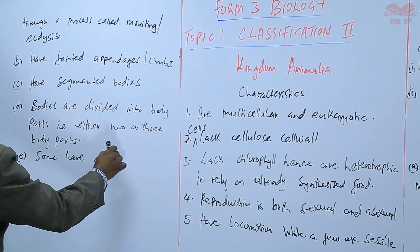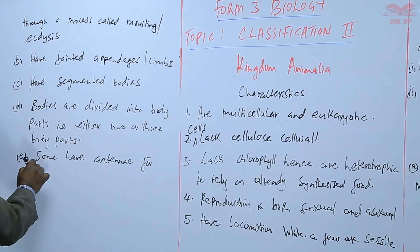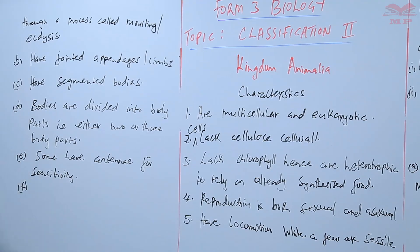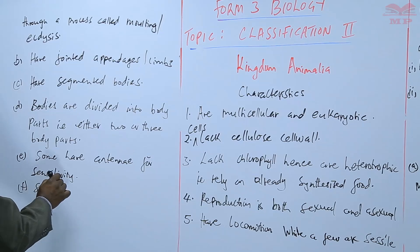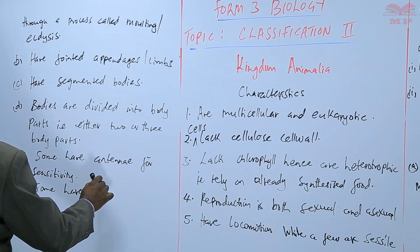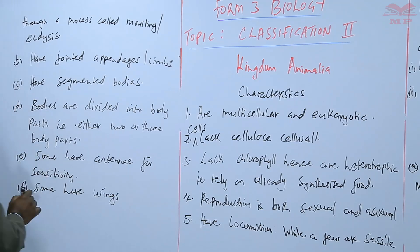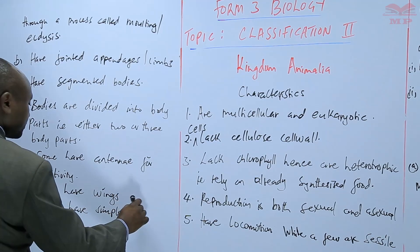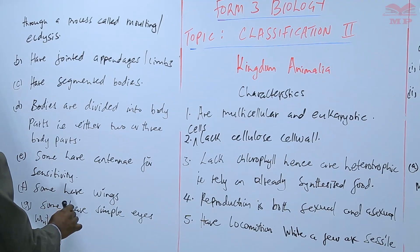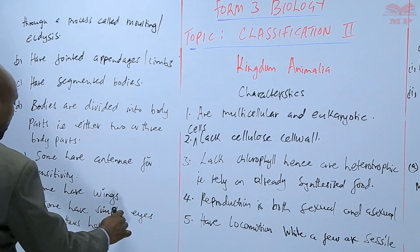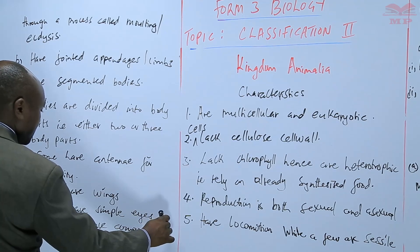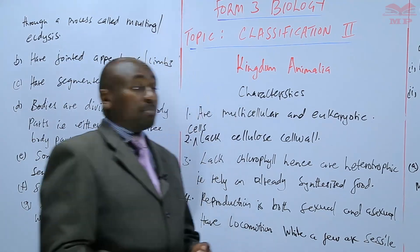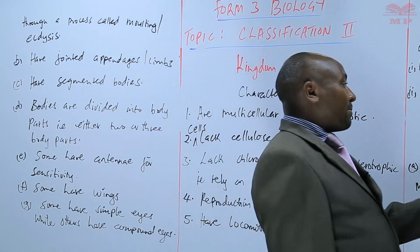Some members have antennae for sensitivity, though not all of them. Some also have wings, again not all of them. Some have simple eyes while others have compound eyes. These are the characteristics that are used to place various animals into Phylum Arthropoda.